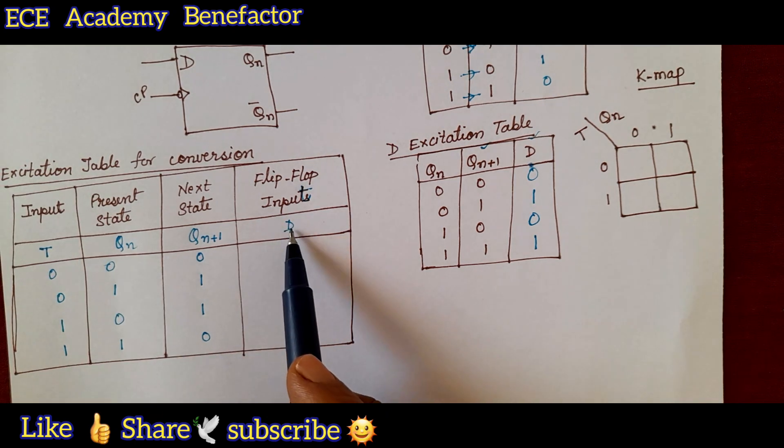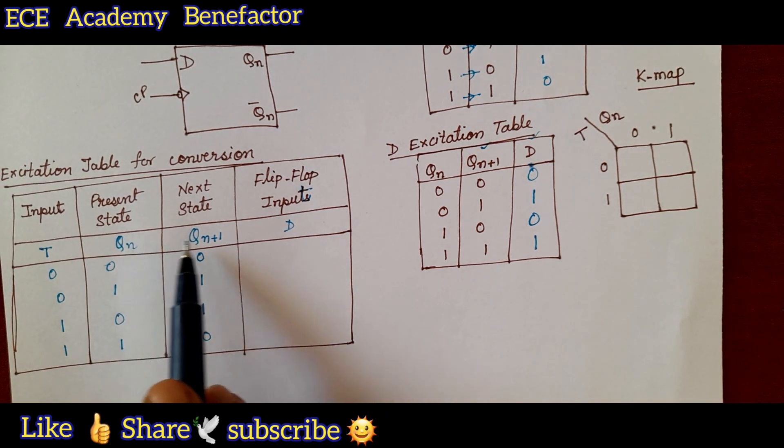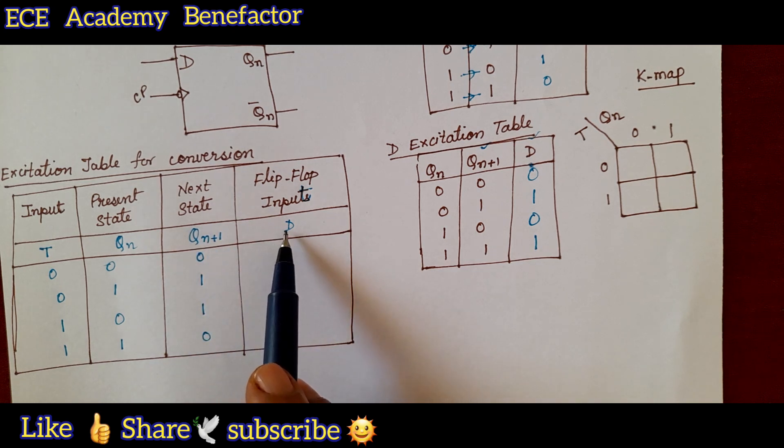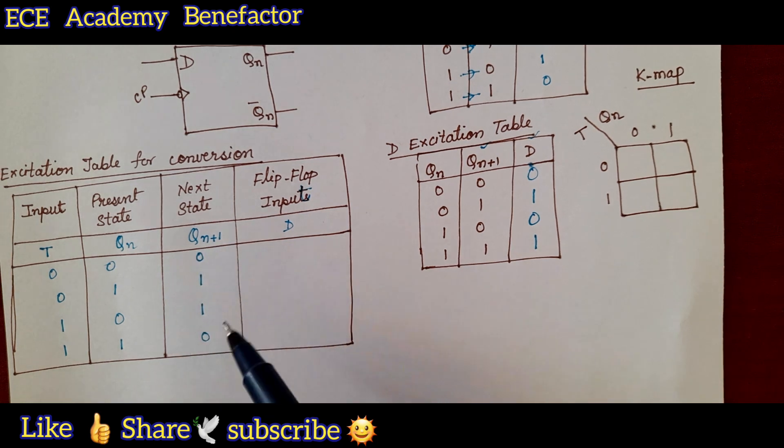Now, for writing the excitation table of D where I have to refer the two columns Q n, Q n plus 1. But as it is easy for D flip-flop that whatever is Q n plus 1 will be appearing for D.